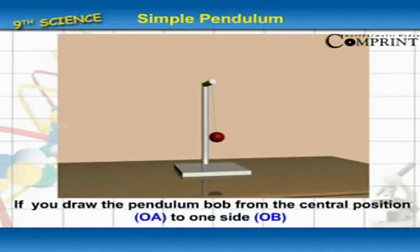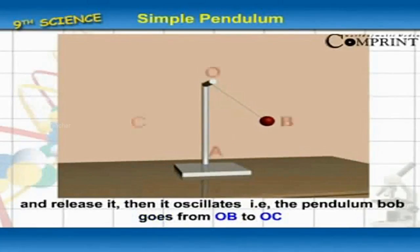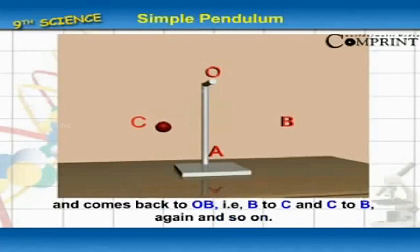If you draw the pendulum bob from the central position OA to one side OB and release, then it oscillates. The pendulum bob goes from OB to OC and comes back to OB.